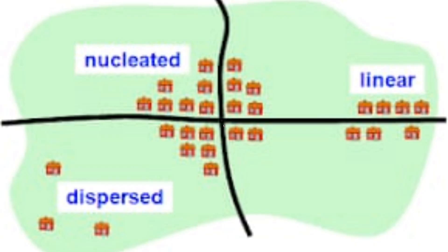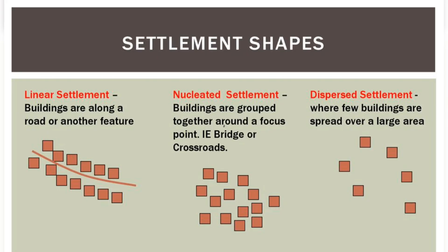There are mainly three types of settlements. First one is nucleated, second one is dispersed which is also called scattered, and third one is linear settlement. The first one is nucleated or clustered settlements.